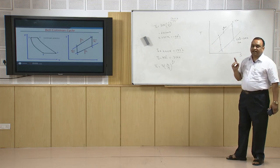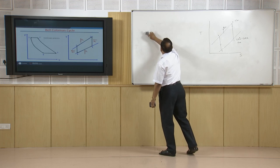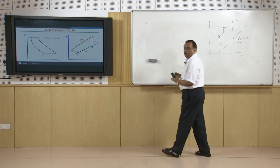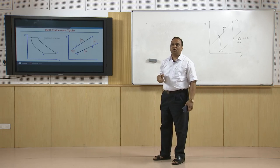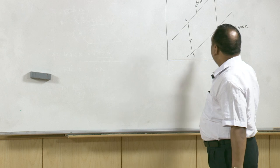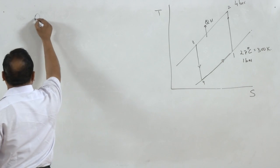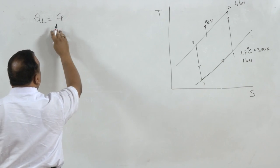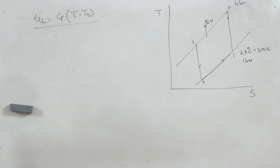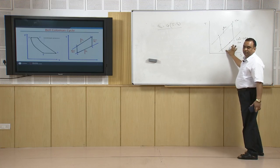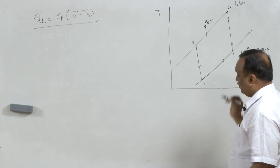With the Bell-Coleman cycle we can get very low temperatures for air. To find the performance of this cycle, we need to know how much heat transfer is taking place and how much energy is consumed in compressing the air. During the refrigeration process 4 to 1, the heat transfer QL = Cp(T1 − T4). This is the refrigeration effect. The work consumed is the area of the PV diagram — work in compression minus work gained in expansion.